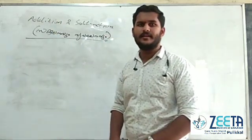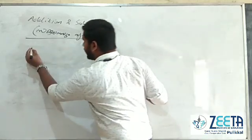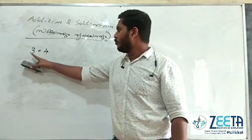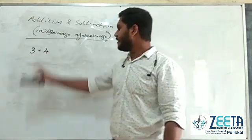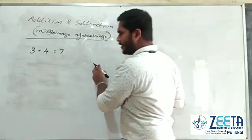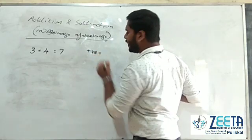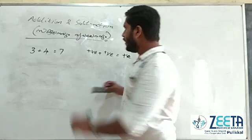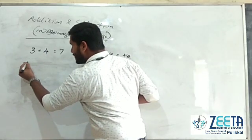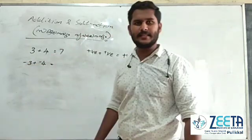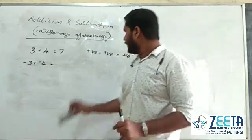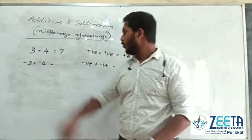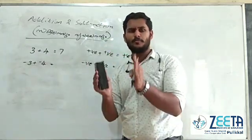We are doing the addition and subtraction of positive and negative numbers. Now, two positive numbers — three, four, two positive numbers. Four positive numbers: two positive numbers plus positive number equals six.